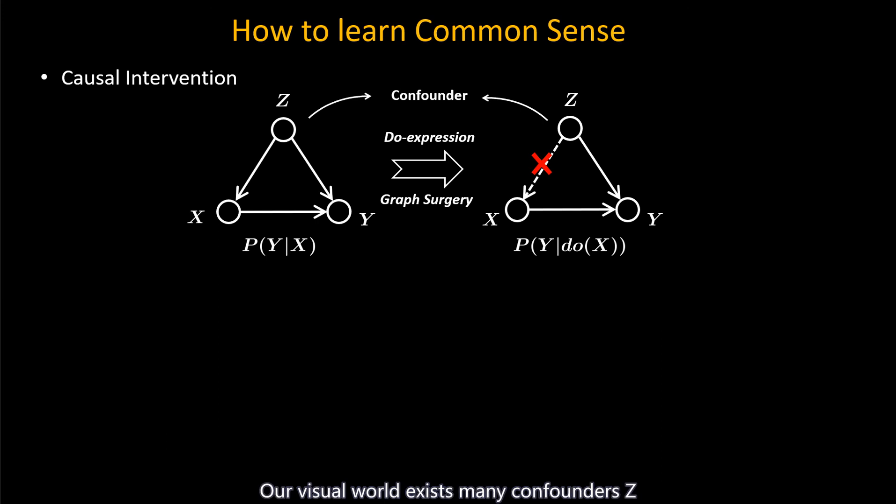Our visual world exists many confounders, Z, that affects either X or Y, leading to spurious correlations by only learning from the likelihood P(Y|X). Here, nodes denote variables and arrows denote the causal effects.